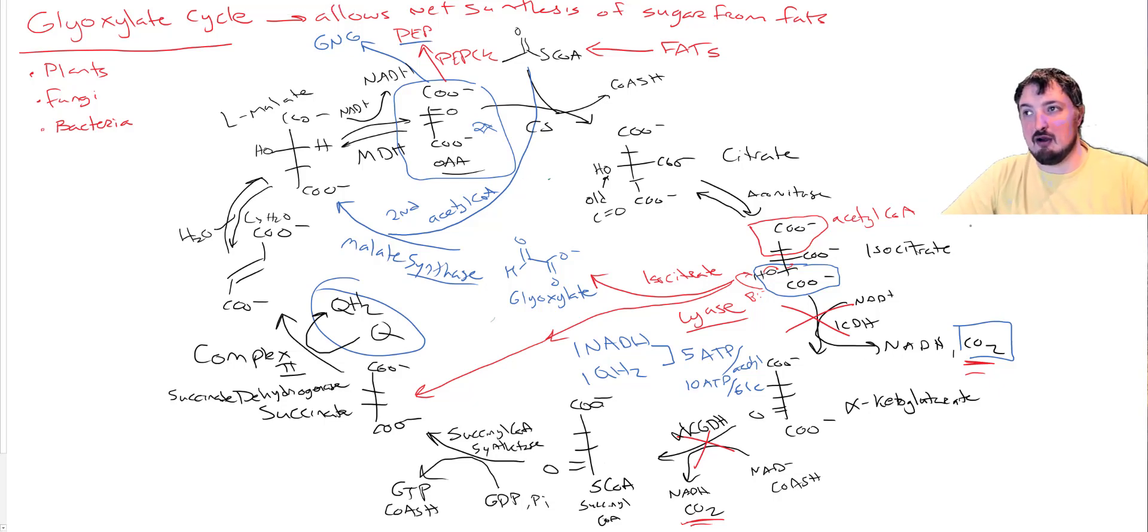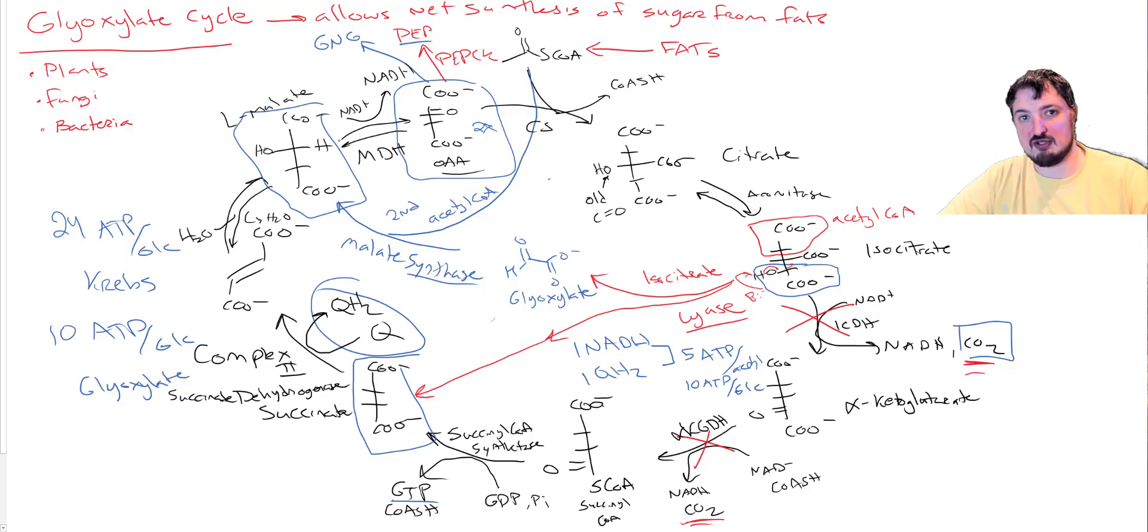But we sacrifice quite a lot of yield. We go from 24 ATP per glucose by Krebs down to 10 ATP per glucose by glyoxylate. So we skip these two irreversible steps here. We also skip over the substrate-level phosphorylation. We skip straight on to succinate, and we make malate. Both of those guys will converge to make double OAAs.